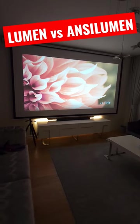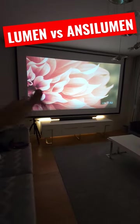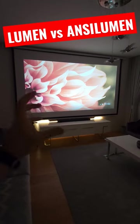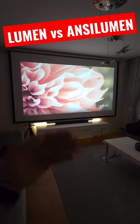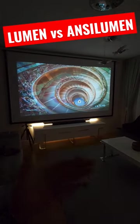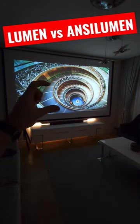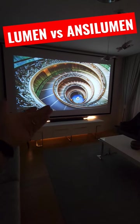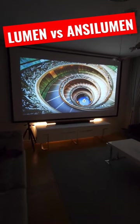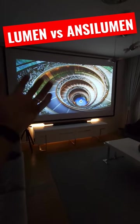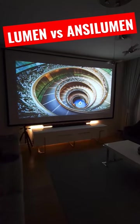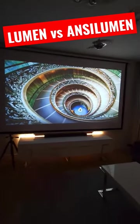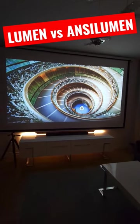ANSI Lumen is a total calculation of your screen size and the LED source power altogether. ANSI Lumen does not change when you go back and forth. Normally, when you go forward, you get a smaller image and a brighter image. When you go back, you get less brightness but also a bigger image. But ANSI Lumen does not change with brightness going back and forth — it's a fixed value because it's calculated from screen size and brightness altogether.